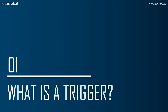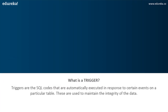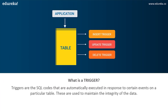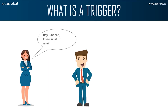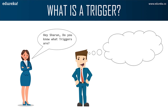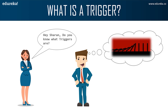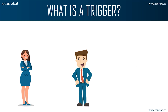The first topic in today's discussion is: what are triggers? Triggers are SQL code that are automatically executed in response to certain events on a particular table. These are used to maintain the integrity of the data in a given table. A trigger in SQL works similar to a real-world trigger. Here we can see Anna is asking Sharon about triggers, and Sharon imagines a trigger as a falling Domino's.